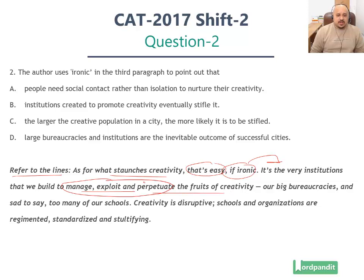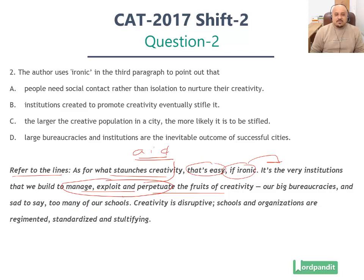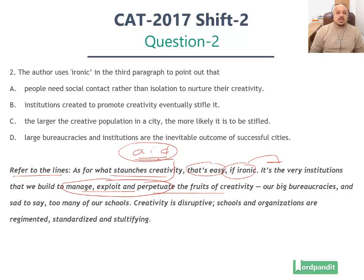In short, you can label it as: things which were meant to aid creativity — bureaucracies and, sad to say, too many of our schools. These are the very things that were meant to aid, support, foster, manage and exploit creativity, and yet these are the very things that are stifling it, stopping its development.